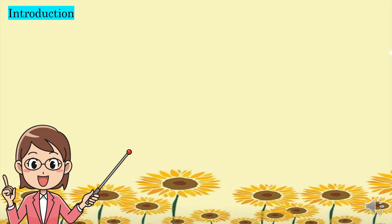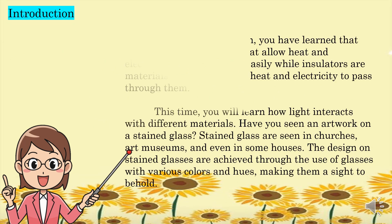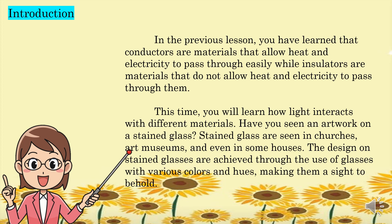For the introduction, in the previous lesson we have learned that conductors are materials that allow heat and electricity to pass through easily, while insulators are materials that do not allow heat and electricity to pass through them. This time, you will learn how light interacts with different materials.